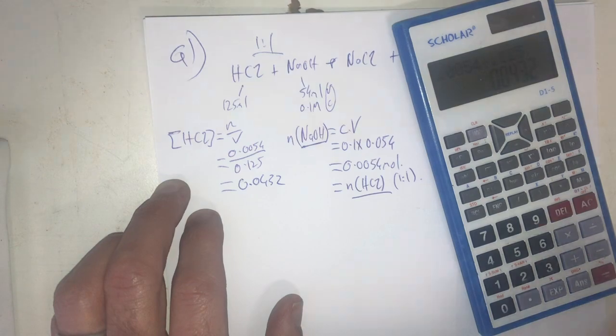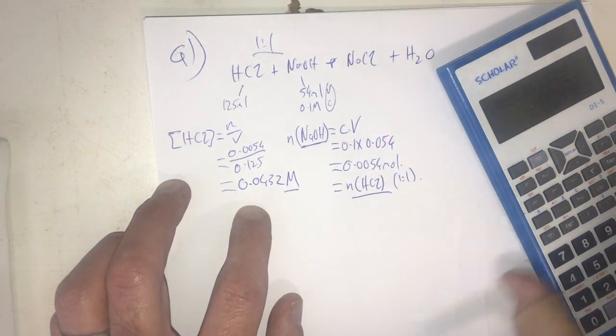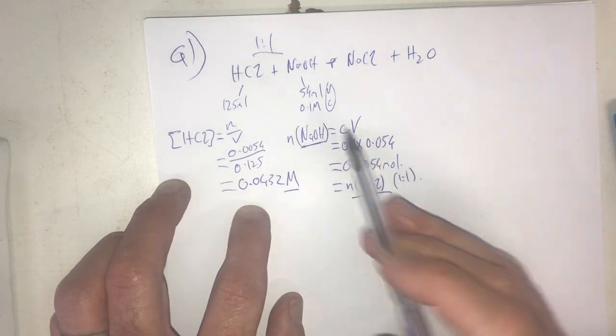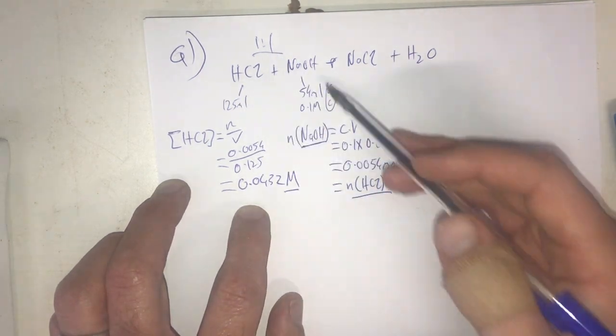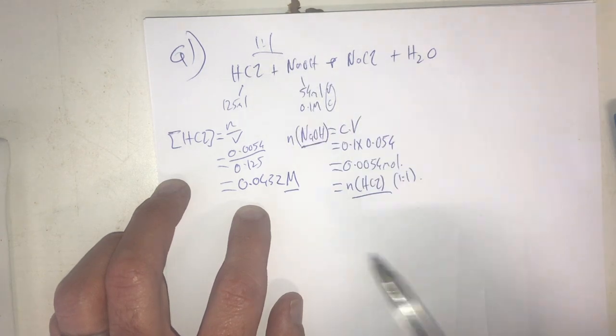That's for question one of this worksheet. That is in molar. Again putting units where I need to. So our equation is simply this and then our ratio is one-to-one. So find out the number of moles of sodium hydroxide, ratio it across to what we don't know which is our hydrochloric acid.